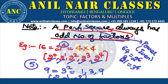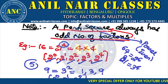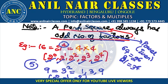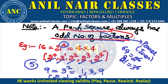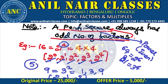This is the theory. Now let me create a question to explain this theory. If a number has an odd number of factors, then it is a perfect square. If it is a perfect square, then the number of factors will always be odd. This is the concept.